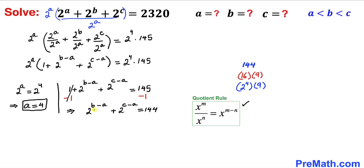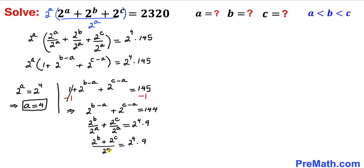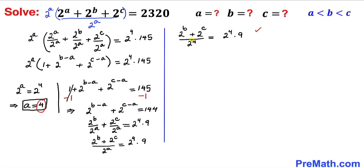Applying the quotient rule on the left-hand side: 2^b / 2^a + 2^c / 2^a = 2^4 × 9. Writing 2^a as the common denominator and substituting a = 4, we get 2^4 in the denominator. Multiplying both sides by 2^4, the denominator cancels, leaving 2^b + 2^c = 2^4 × 2^4 × 9 = 2^8 × 9.